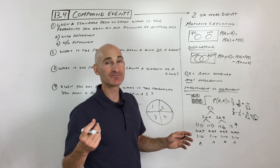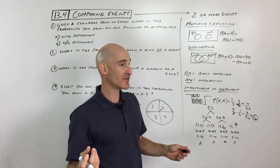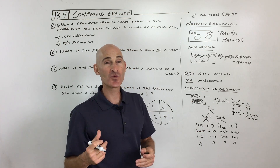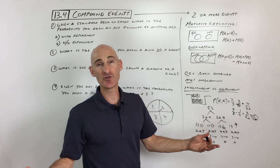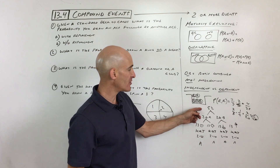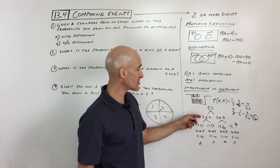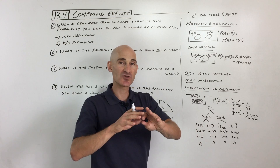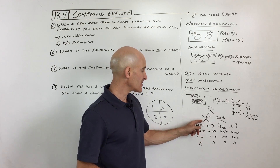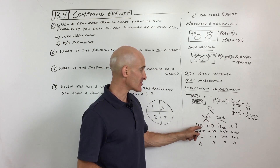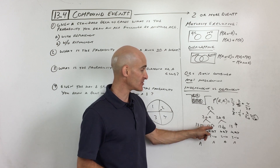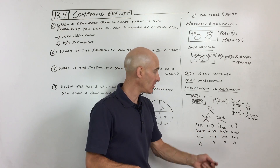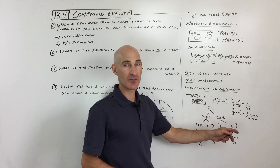I want to mention that a lot of probability questions relate to a standard deck of 52 playing cards, so it's good to understand how they're broken down. There are 52 cards: 26 are red and 26 are black. Of the 26 red cards, there are 13 hearts and 13 diamonds. Of the 26 black cards, there are 13 spades and 13 clubs.